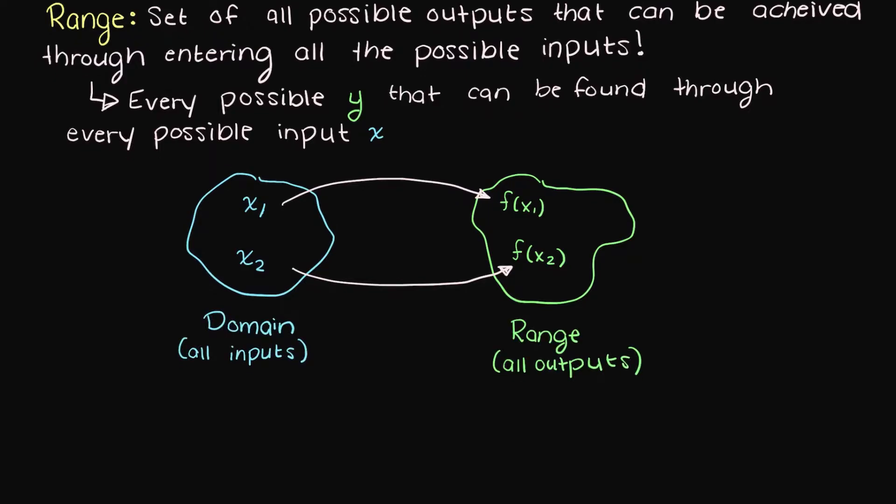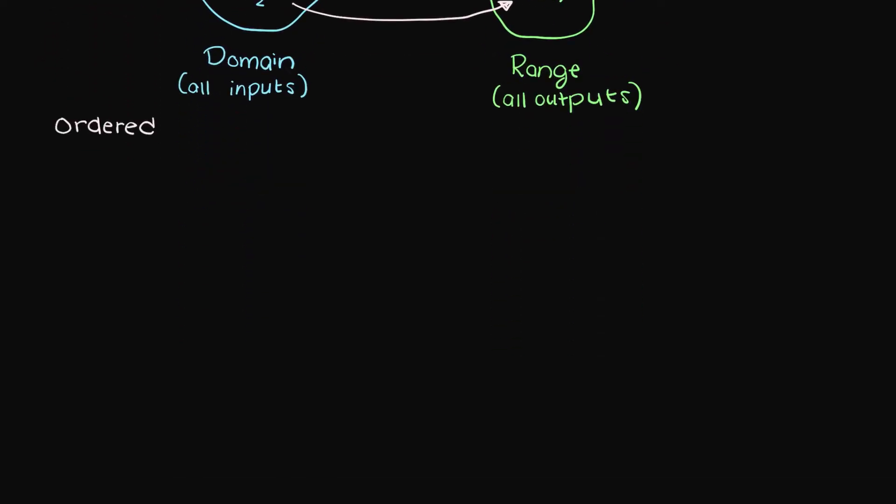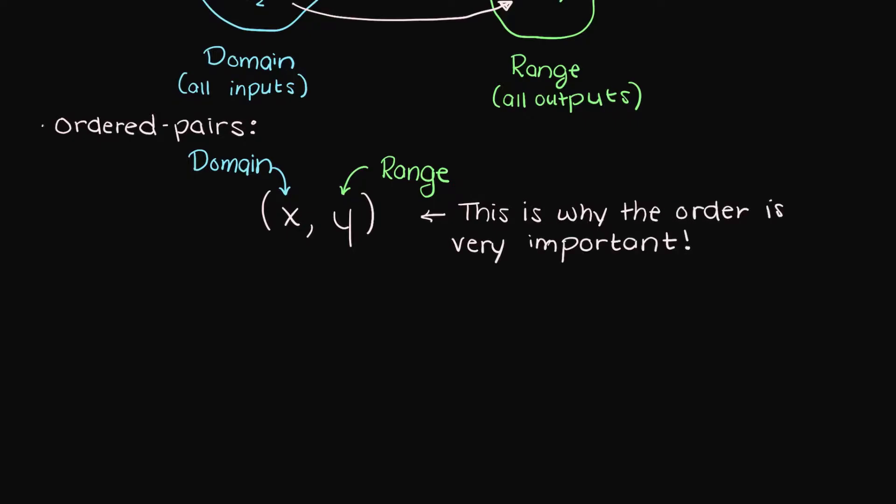Looking at the ordered pair idea that we introduced previously, the domain is the set of all the possible first components in our ordered pair listings, and the range is the set of all possible second components. This is why the order of x and y is very important in ordered pairs. We always list the independent or the input first and then the output or the dependent variable second. So in the ordered pair we have x and then y.